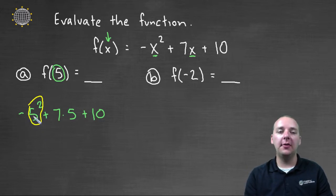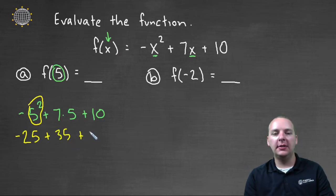So we would actually take five squared, which is twenty-five, and then we would leave it negative, or make it negative. And then we'd have plus thirty-five, and then plus ten. So negative twenty-five plus thirty-five is ten, and ten plus ten makes twenty.